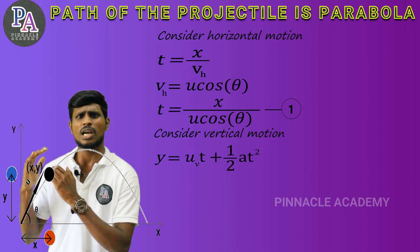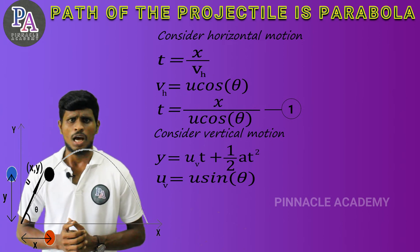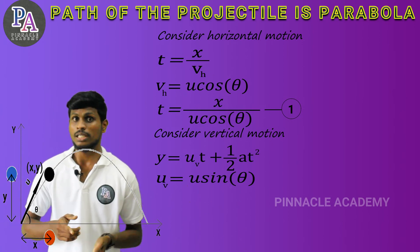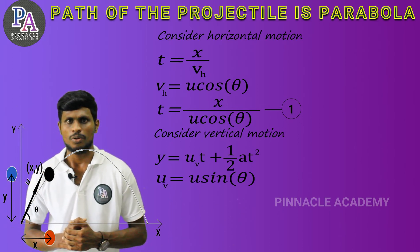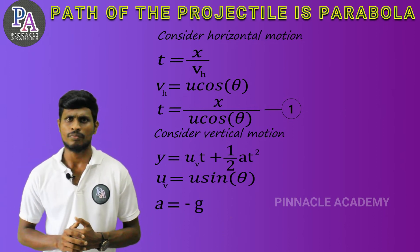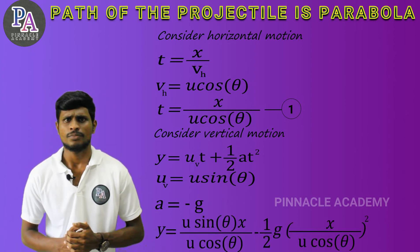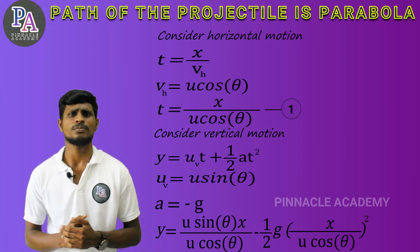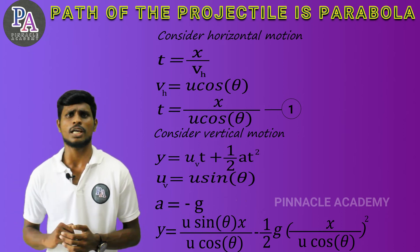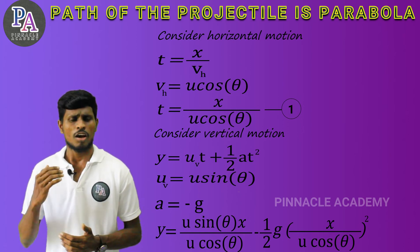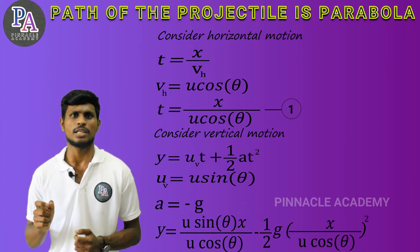The vertical velocity is u sin theta, because u sin theta is the vertical component. Time t is equal to x by u cos theta. The acceleration is minus g. We have the equations: y is equal to u sin theta into x by u cos theta, minus 1 by 2 into g t squared, where t is equal to x by u cos theta. That's the square.